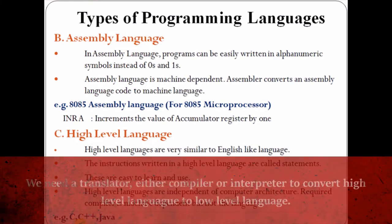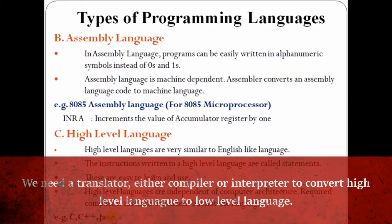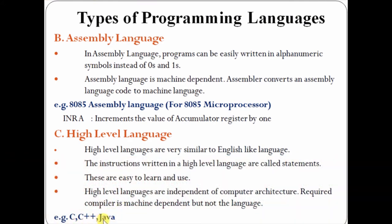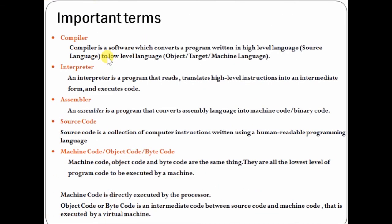We need a C compiler or Java compiler to run a program written in C, C++, or Java. Three important system software related to programming languages are compiler, interpreter, and assembler. A compiler converts a program written in high level language to low level language so that a machine can execute the program.